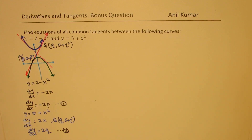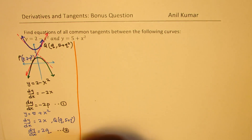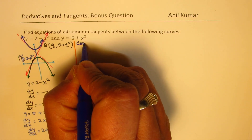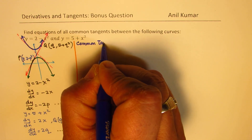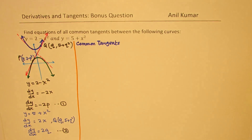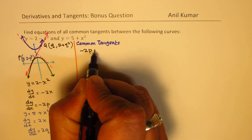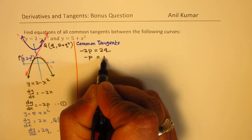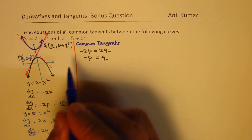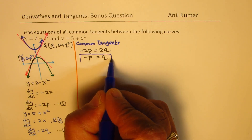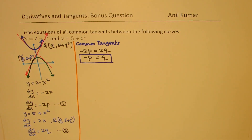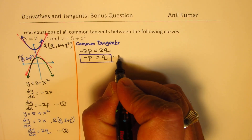Since we are talking about common tangents, the slopes must be equal. That means minus 2p should equal 2q, which gives us minus p equals q. So we get a relationship between the x values of the two points of tangency. Let's call this equation number 3.